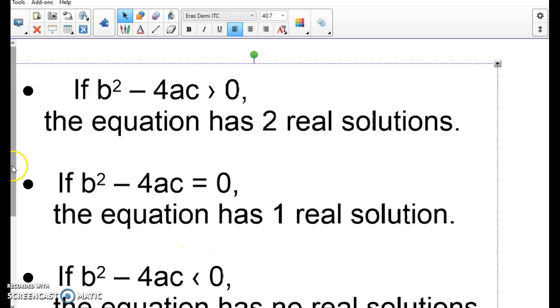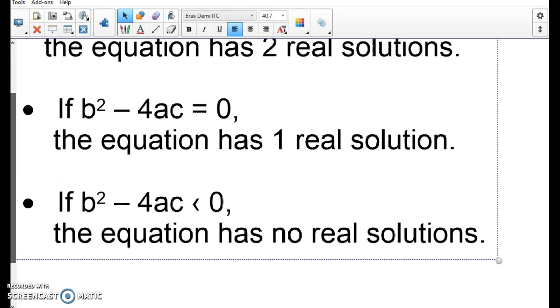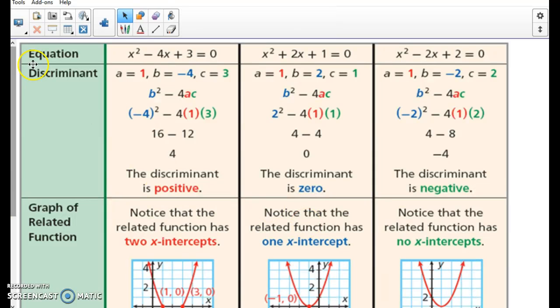If you have something that's less than zero, so like a negative, then it's going to have no solutions because that graph is going to end up looking like this.